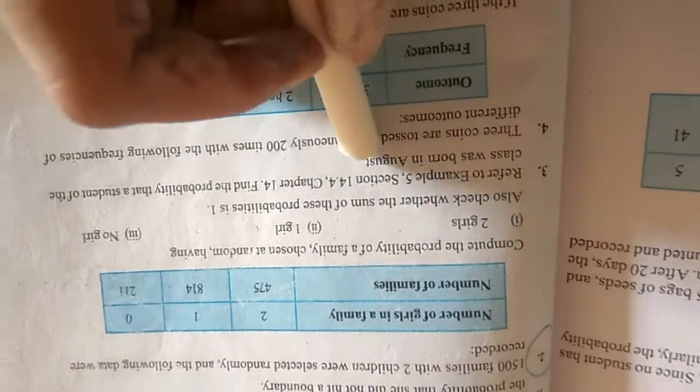Find the probability that a student of class was born in August. So let's move on to our example number 5. Dear students, it is on page number 247.